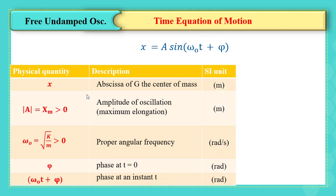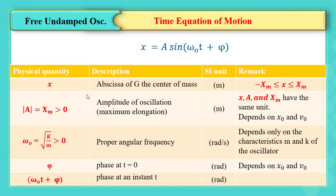The unit of x is meters. The amplitude is also in meters. ω₀ is in radians per second, and φ and ω₀t + φ are in radians. It is important to know that x lies between −xm and +xm. The amplitude depends on x₀ and v₀. ω₀ depends only on the characteristics m and k of the oscillator, while φ depends on x₀ and v₀, the initial values.